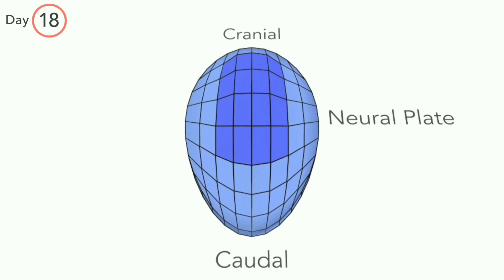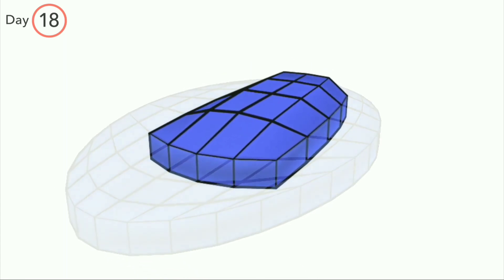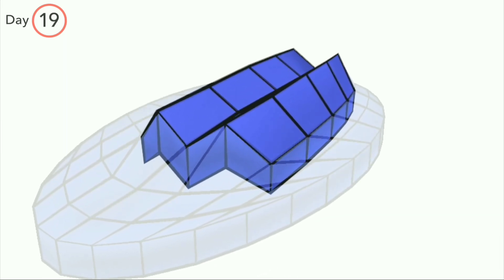It lies between the cranial end and the primitive node. This process, in which the neural plate transforms into the neural tube, is known as neurulation.